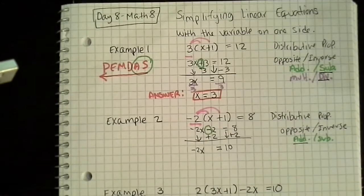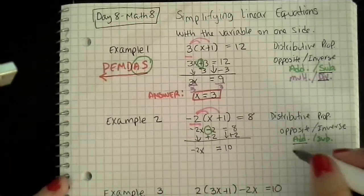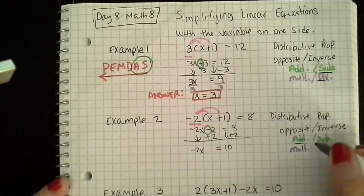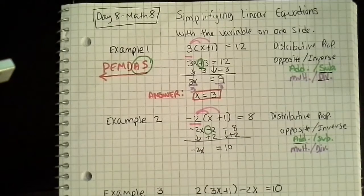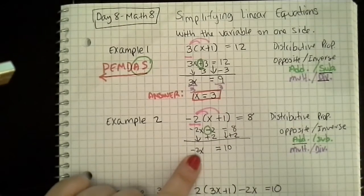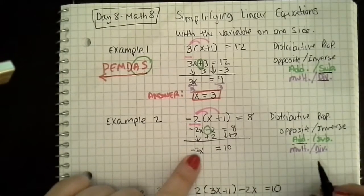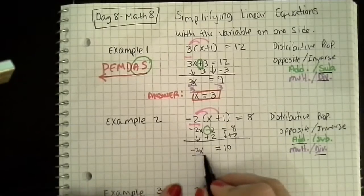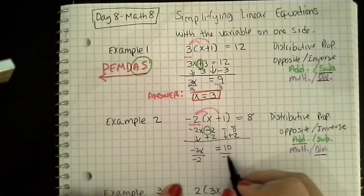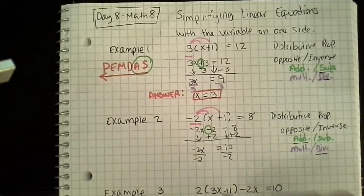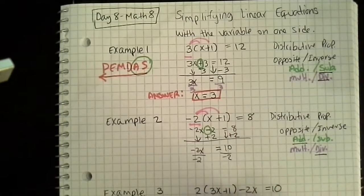So my next inverse is multiplication or division. Any time I have a number in front of the x like this, that means multiplication, so the inverse is division. So I need to divide both sides by negative 2.